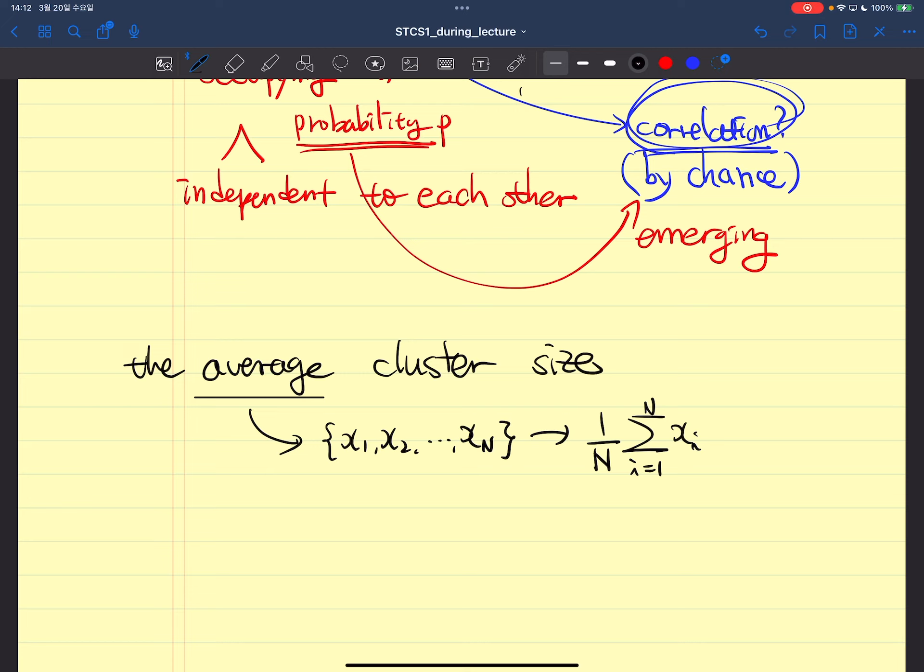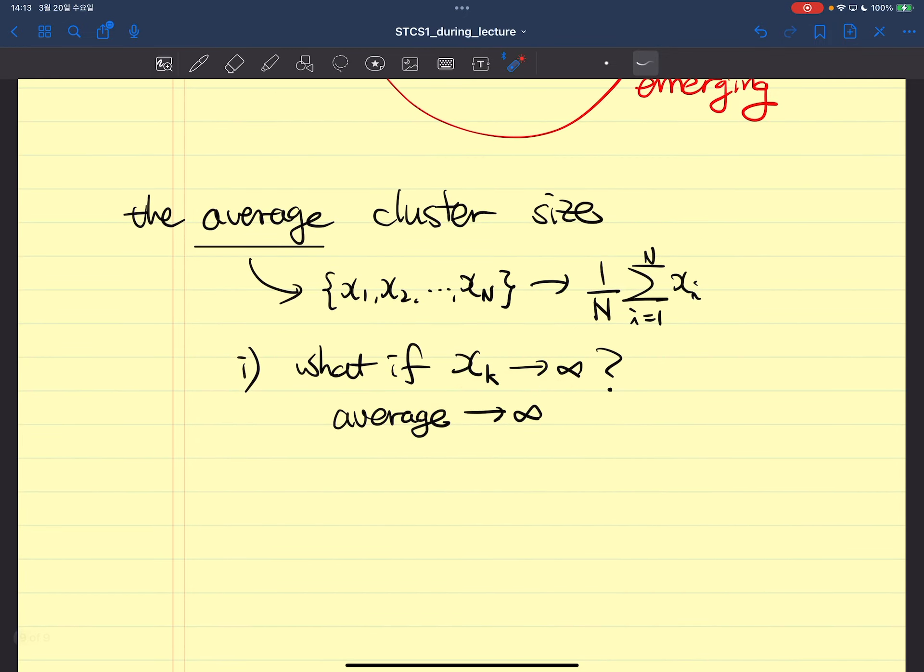Since we are talking about infinite size lattice and the possibility of infinite size cluster, problems can occur. First, what if a particular cluster x_k goes to infinity? Then the average, according to this definition, should diverge as well.